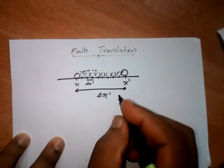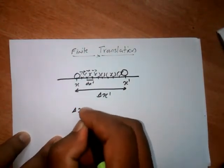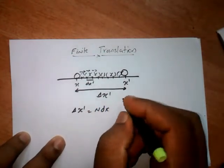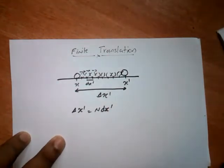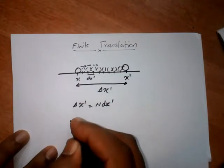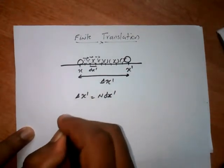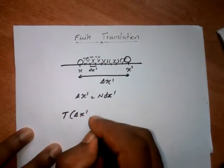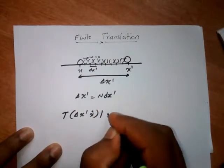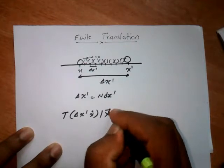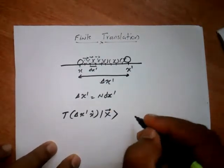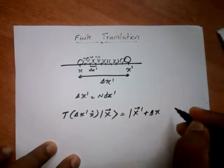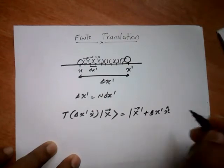Consider a finite translation in the x direction. We can write delta x' equal to n number of infinitesimal translations. We can write the finite translation operator in the x direction as T(delta x') operating on a position ket equal to |x' + delta x'⟩ in the x direction.